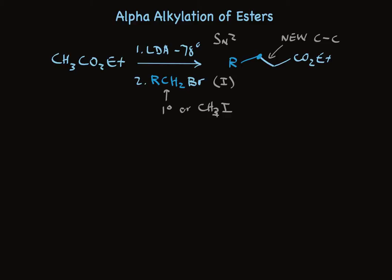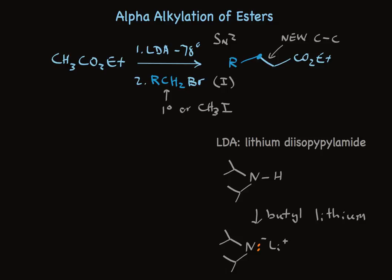LDA stands for lithium diisopropylamide. It's made by treating diisopropylamine with butyl lithium, a very strong base, to make this lithium diisopropylamide, which itself is a very strong base. It's strong enough so that it will remove the alpha-proton of the ethyl acetate quantitatively.